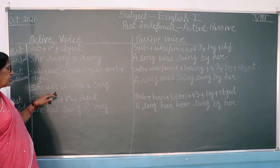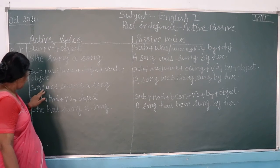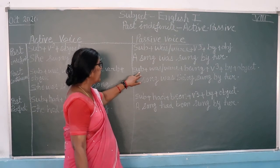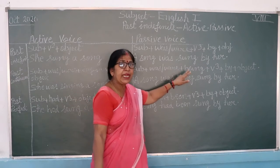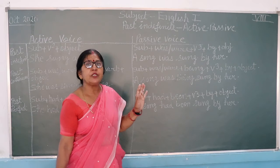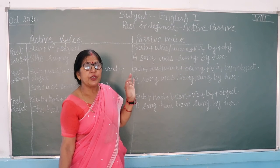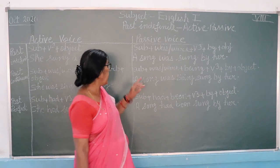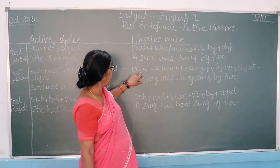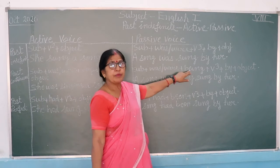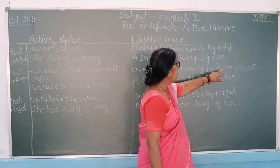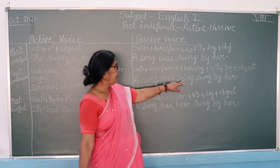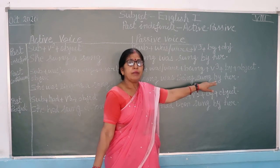She was singing a song. For the past continuous tense, the formula is: subject plus was/were plus being plus the third form of the verb plus by plus object. So the passive voice of the continuous form uses the additional word 'being'. The answer is: a song was being sung by her.